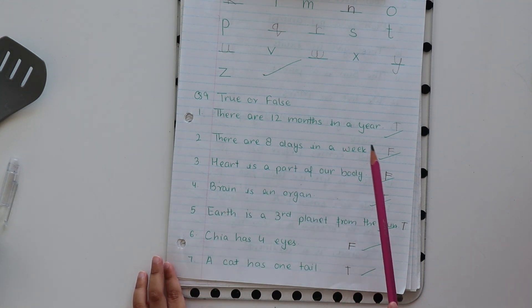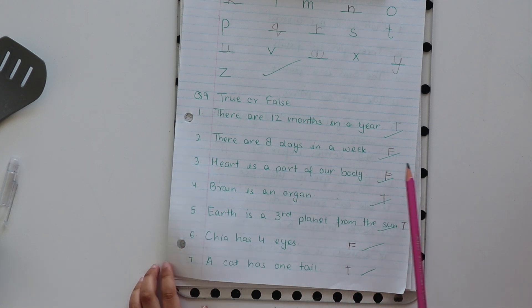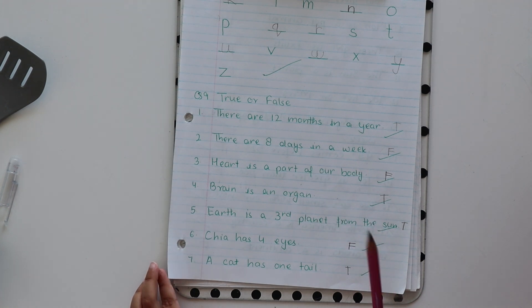There are 12 months in a year. True. There are 8 days in a week. False. Why? How many days are there in a week? Seven. Very nice. Next. Heart is a part of our body. False. It's an organ. Very nice. It's an organ. Brain is an organ. Correct? Earth is a third planet from the sun. Correct? It's true. Chia has four eyes. No, I don't have four eyes. So how many eyes do you have? I have just two eyes.